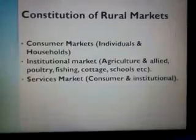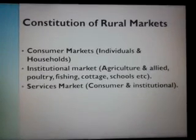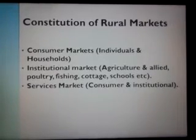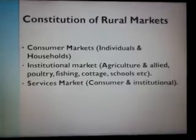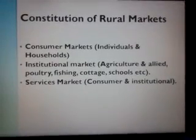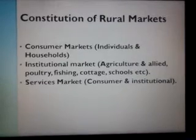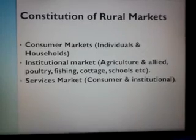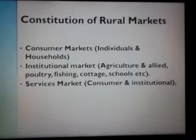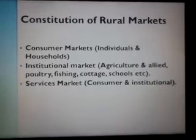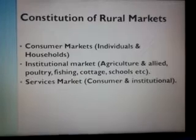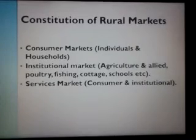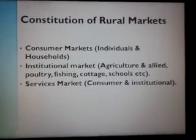Just like urban markets, rural markets can also be classified into consumer markets, institutional markets, and services markets, though the products may differ. Consumer markets are where individuals buy products for self and family consumption — many products like FMCG items such as soap, oil, shampoo, toothbrush, and toothpaste are purchased by rural households.